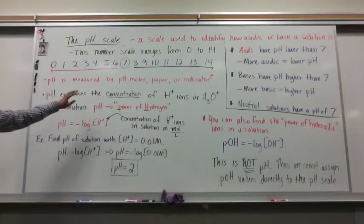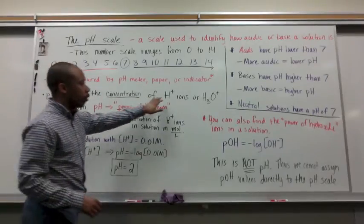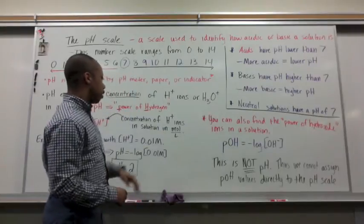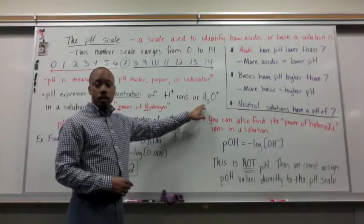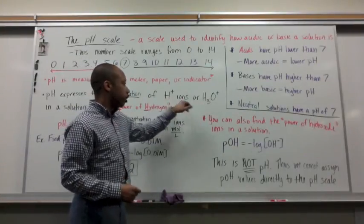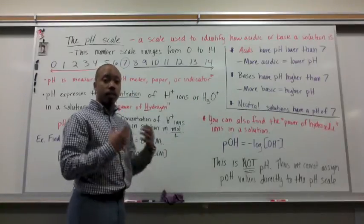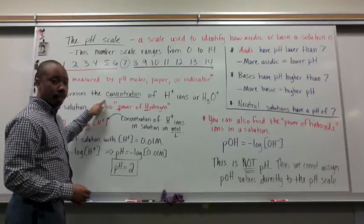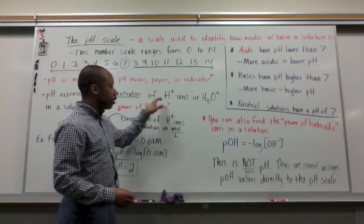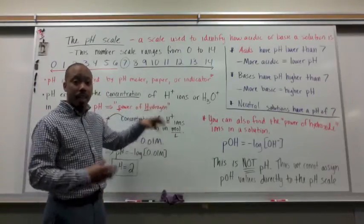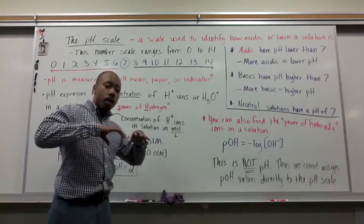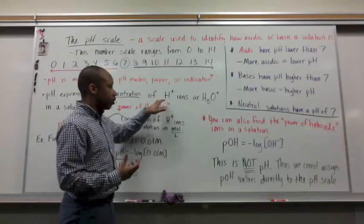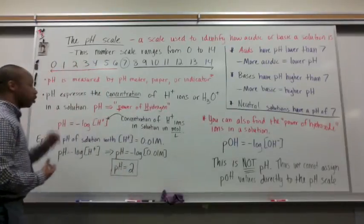pH expresses the concentration of hydrogen plus ions or H3O+. Remember in our first video we talked about the relationship between H+ and H3O+, essentially they're the same thing. pH is expressing the concentration of hydrogen plus ions in solution. So how many moles per liter of hydrogen ions do you have in solution? That's what pH is measuring.